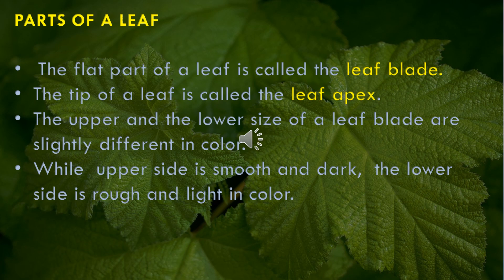Parts of a leaf: the flat part of a leaf is called the leaf blade. The tip of the leaf is called the leaf apex. The upper and lower sides of a leaf blade are slightly different in color — the upper side is smooth and dark, while the lower side is lighter in color.